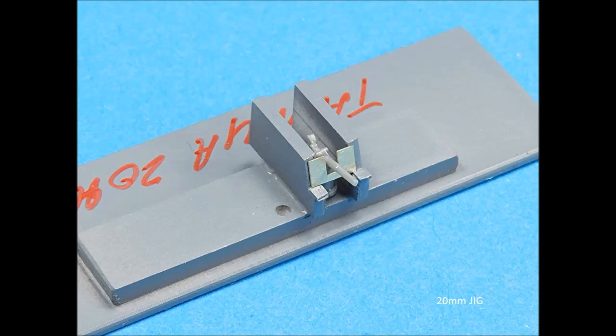To improve the positioning of photo etched 20mm gun shields, make a jig so that all the shields will have the same angle on the gun. The jig also ensures that the shields will be straight and level.